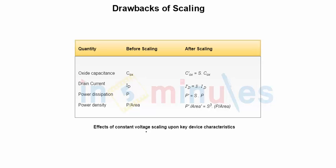We also saw that the effect of constant voltage scaling on the device characteristics was a bit different. The oxide capacitance here as well increased by a factor of S, my drain current increased by a factor of S — whereas in constant field scaling it was reduced by a factor of S — power dissipation increases by a factor of S, and power density is increased by a factor of S cubed. Now, certain parameters varied in different directions in constant field scaling and constant voltage scaling, but due to the use of level shifters and voltage translator circuits, we would not be preferring constant field scaling, and hence we go ahead and use partial scaling.